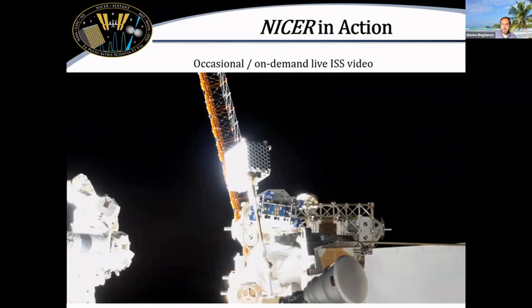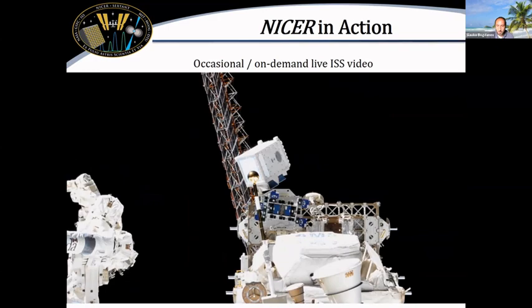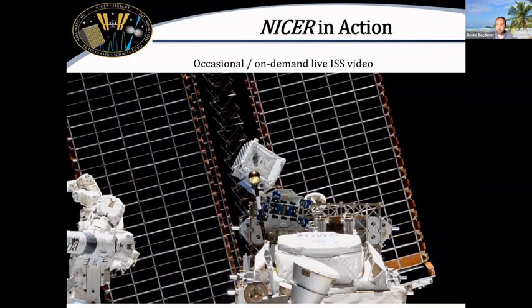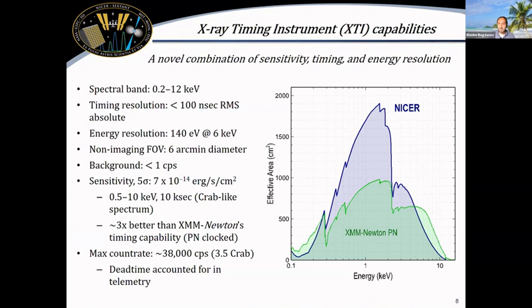NICER is an attached payload on the space station and is actually the most productive scientific instrument on the space station by orders of magnitude in terms of scientific productivity. It's a dedicated mission operating in the soft X-ray band. One of its defining characteristics is a phenomenal absolute timing resolution of better than 100 nanoseconds, with comparable energy resolution to CCD in the soft X-rays. It's a non-imaging instrument that collects all photons within a 6 arc-minute field of view.